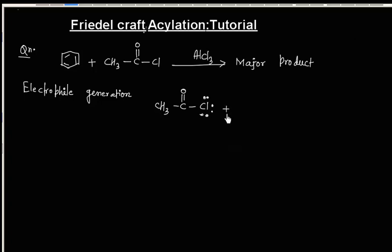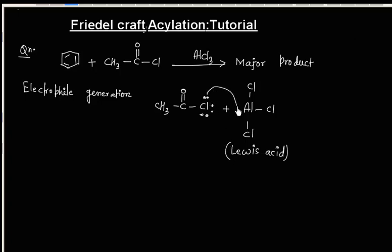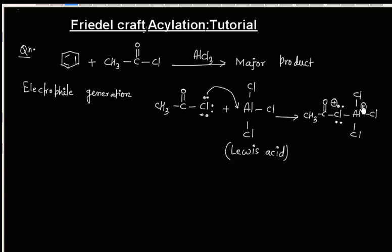AlCl3 acts as a Lewis acid. It is an electron-deficient compound, so it can gain electrons from chlorine and will form a complex. Chlorine will have a positive formal charge and aluminum will have a negative formal charge. In the next step, we can break this carbon-chlorine bond to generate the electrophile CH3CO+.